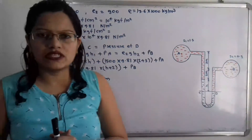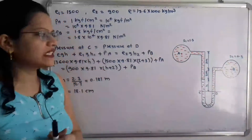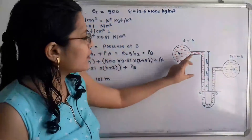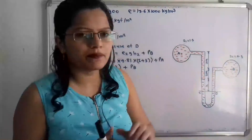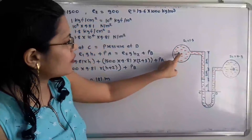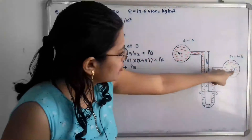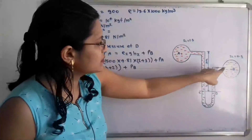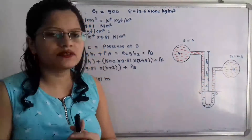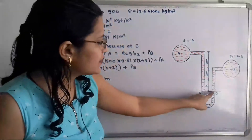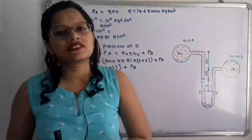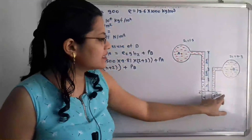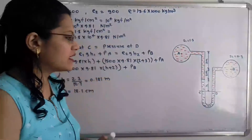Now observing the diagram given in the question, here is pipe A and pipe B. From the center of pipe A to the center of pipe B, the height is 3 meters. From the center of pipe B down to the mercury level, the height is 2 meters. The difference in mercury level H is what we need to find. We consider line CD as the datum line.